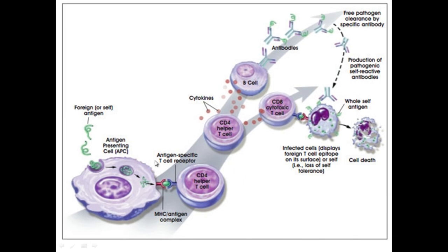If you look at this section here, it refers to the antigen-specific T cell receptor. Antigens have a very, very specific shape, so an antigen on the surface of a particular bacteria will be different to the antigens on the surface of a virus. There are very specific receptors found on the surfaces of these cells, so it takes some time to locate the specific receptor and indeed the specific CD4 cell.